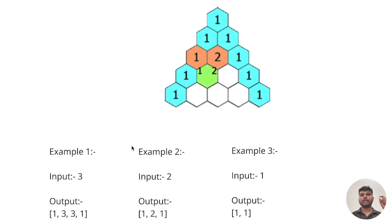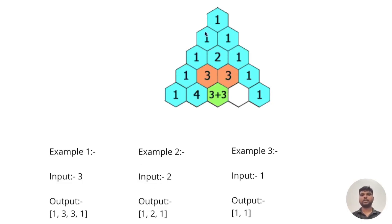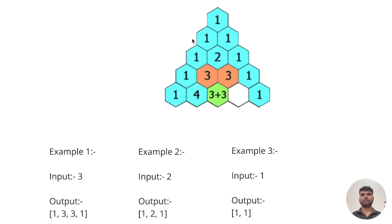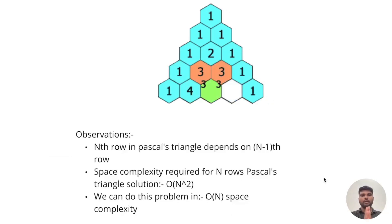In the second example, we are given input as 2, so we need to return the second row of Pascal's Triangle — zero, one, second — which is [1, 2, 1] as an array. Similarly, in the third example we are given input as 1, so we need to return the first row of Pascal's Triangle.